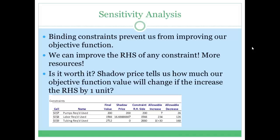For example, for the pumps case for the Blue Ridge Hot Tub problem, we had on the left-hand side x1 plus x2, and we know the optimal solution x1 is equal to 122 and x2 is equal to 78. So if we plug these values into the left-hand side of the pump constraint, we get 122 plus 78 which is 200. This value is displayed as the final value, so it's equal to 200, and we see that this value 200 is equal to the right-hand side value.